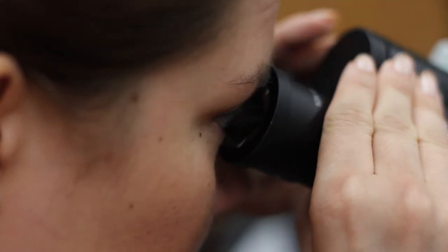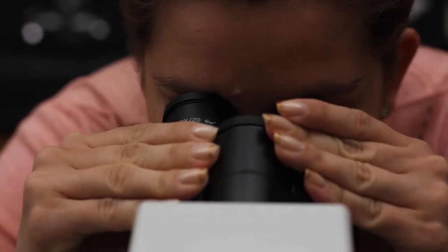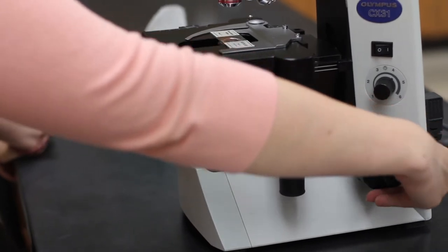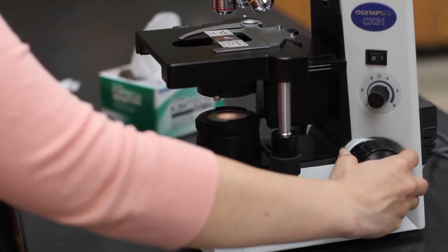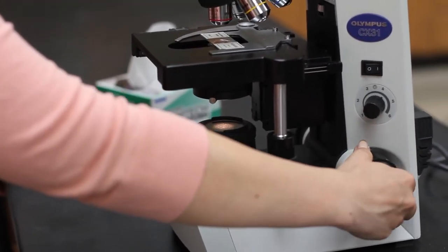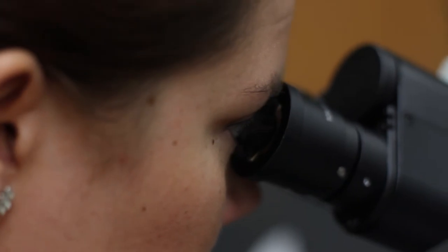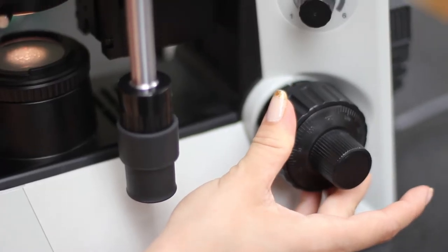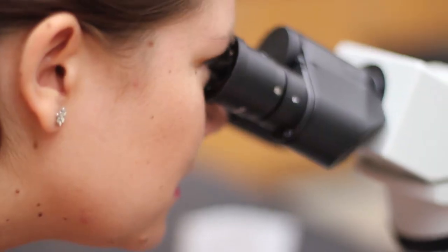Adjust the ocular interpupillary distance so the image appears as a single circle when you look through the eyepieces. Raise the stage completely using the coarse focus knob. While looking through the oculars, slowly lower the stage until the image is fairly clear using the coarse and then the fine focus knobs.